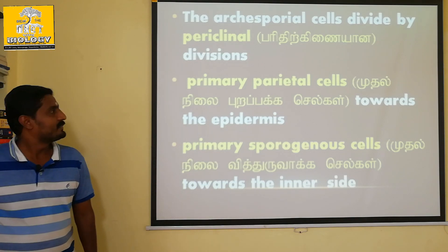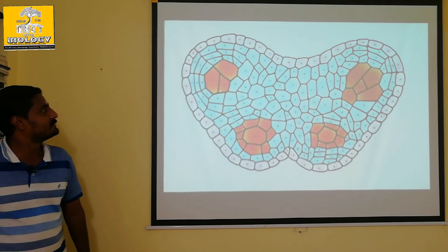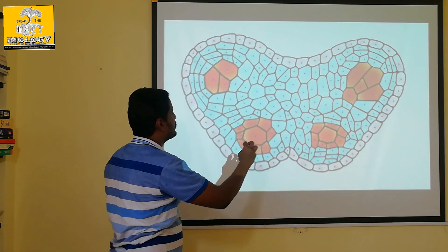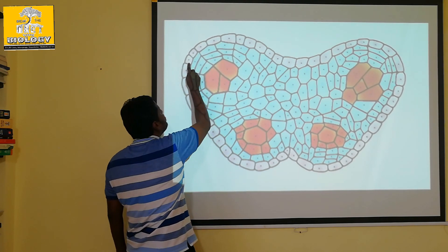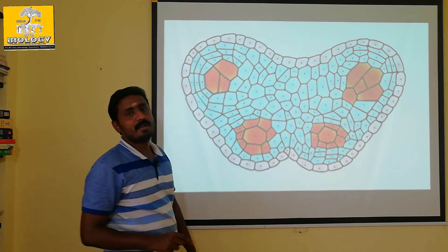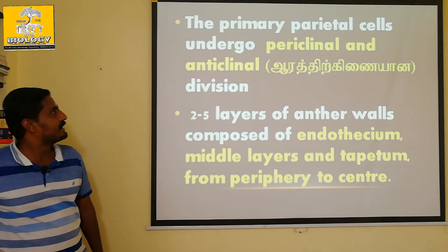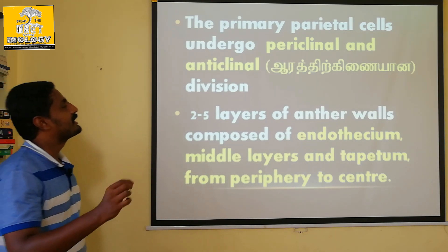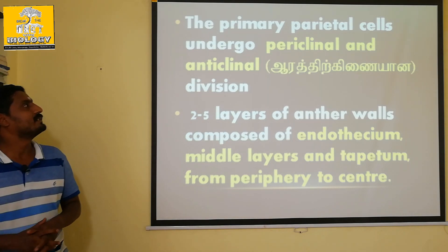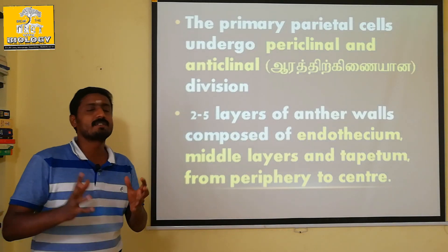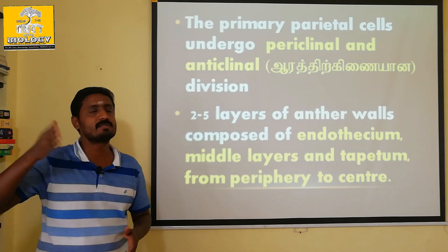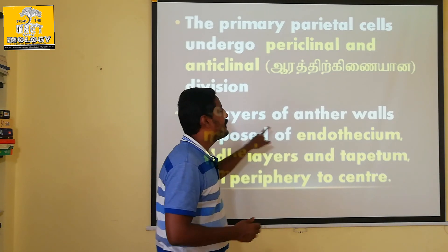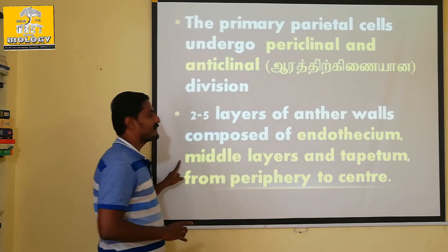Step 4: The primary parietal cells develop further. The wall layers become distinct. Primary parietal cells undergo both periclinal and anticlinal division. This results in the production of 2 to 5 wall layers — endothecium, middle layer, and tapetum — from the periphery to the center.